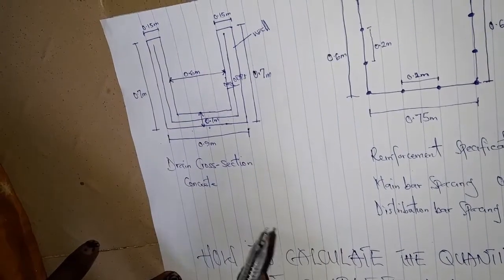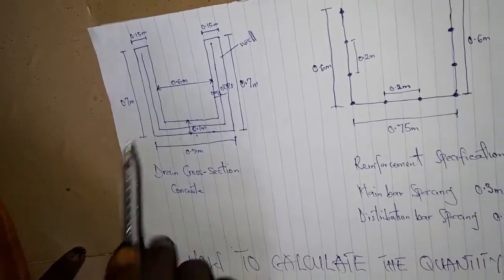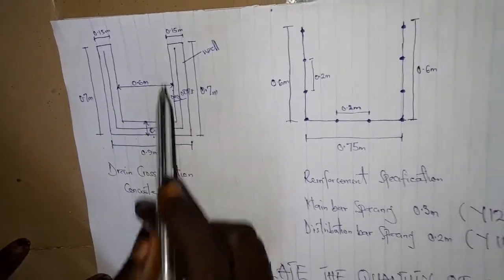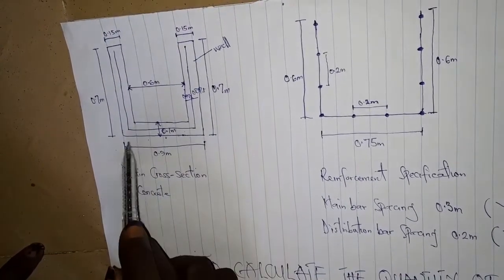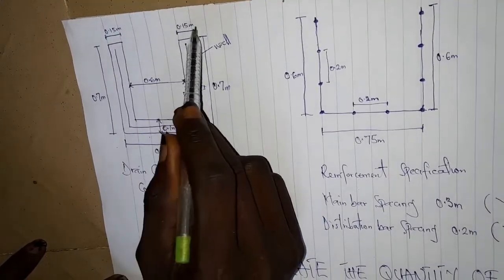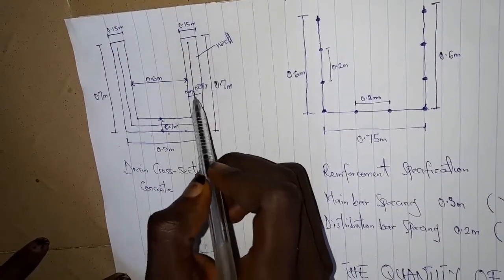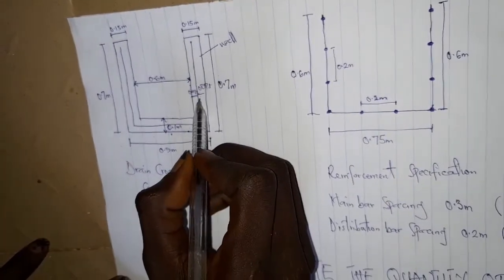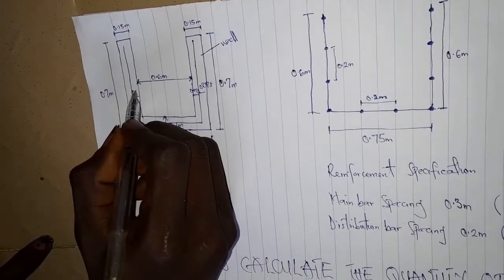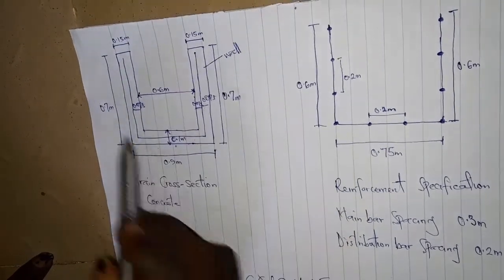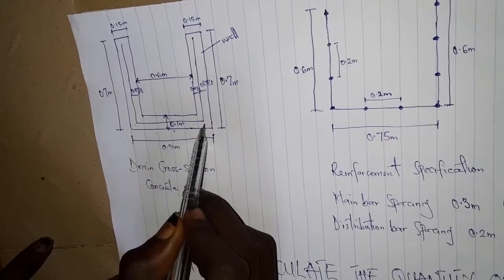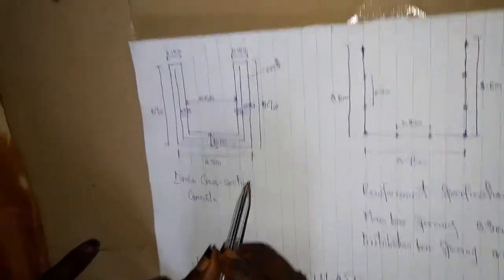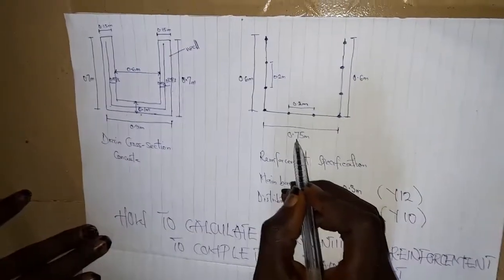To get the specification of the reinforcement to be used, we have the in-to-in width of 0.6 meter, in which the iron will be positioned at the middle of the wall. The wall is 0.15 meter, so the middle will be 0.075 meter on each side. That means we are adding 0.075 at each end, so the width of the reinforcement will be 0.6 plus 0.075 plus 0.075, which gives us 0.75 meters.